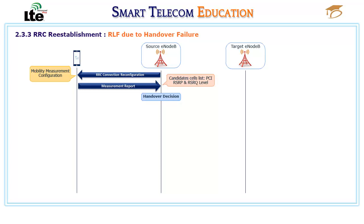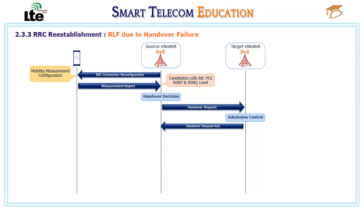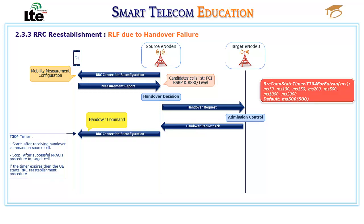If required, the source eNodeB sends a handover request to the target eNodeB. If the admission is successful in the target eNodeB, then the target acknowledges the handover by sending a Handover Request Acknowledged to the source eNodeB. In the next step, the source eNodeB sends a handover command to the UE, and the timer T304 is started to supervise the handover procedure. The timer T304 will be stopped after the completion of the PRACH procedure in the target eNodeB.